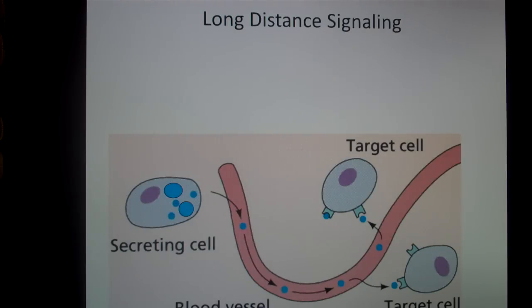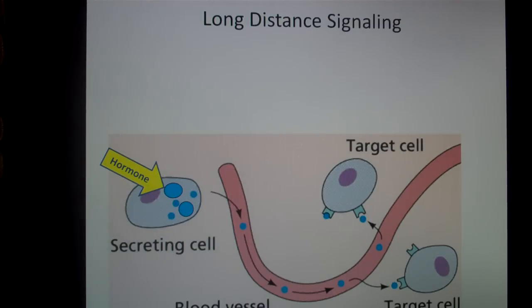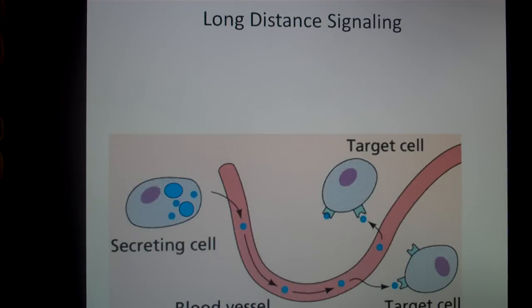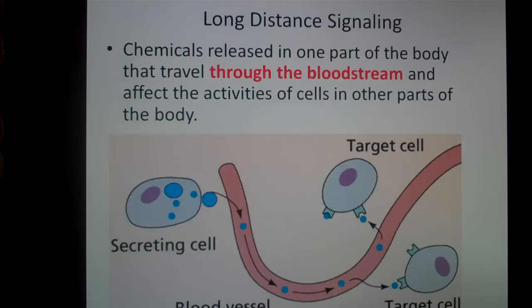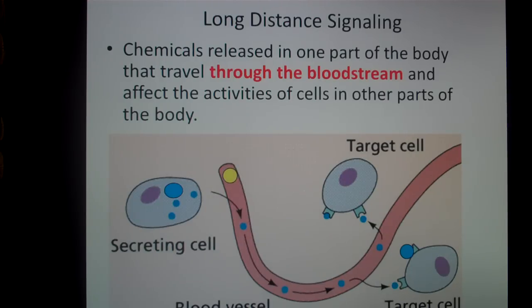The other kind of signaling is long-distance signaling, also called endocrine signaling because it uses hormones. Down here in our secreting cell, we have hormones shown in blue. A secreting cell could be a gland. The hormone is released into the blood and carried through the circulatory system to reach its target cells. Once it gets to its target cell, it will attach to a receptor protein. Or sometimes, if it's a lipid hormone, it will just travel right through the cell membrane. Some hormones will pass cells that have no receptors for them and just keep traveling to their target destination.